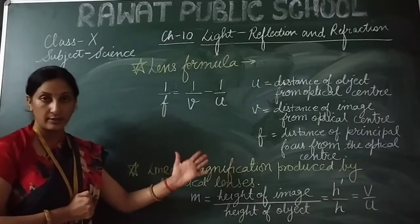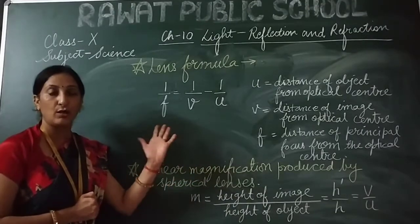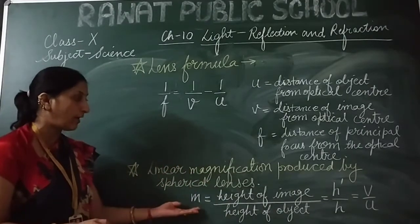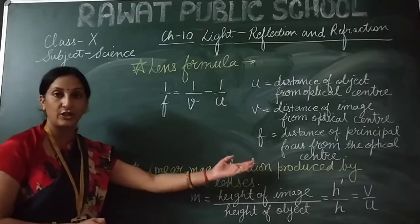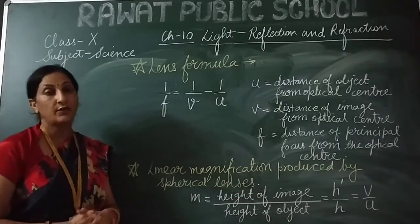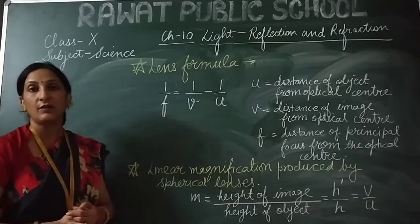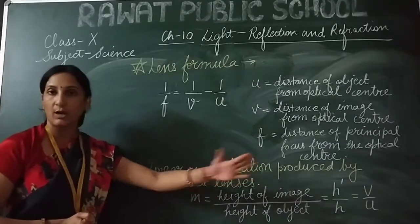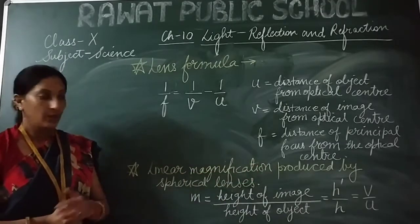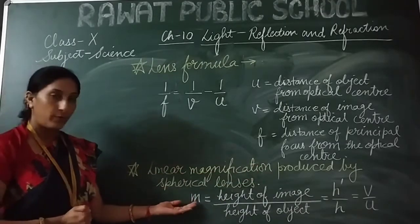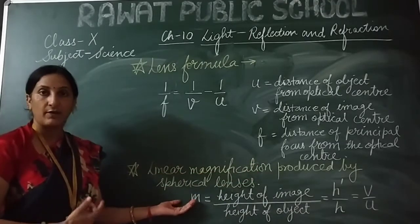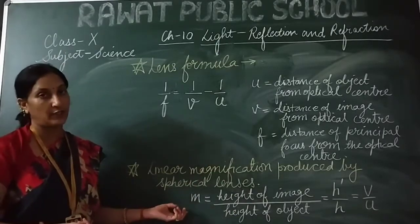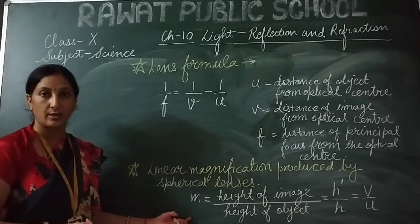If heights are given in the question — image height and object height — then we will use M = h'/h. If distances are given, then we will use M = V/U. Whatever is given in the question, we will use the appropriate formula to calculate magnification.